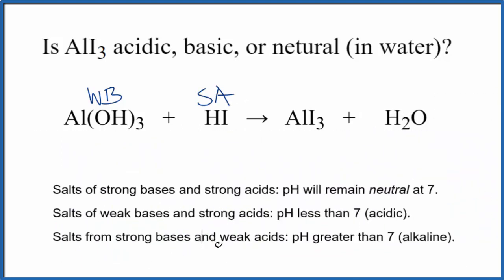We can use these rules here to figure out whether AlI₃ is acidic, basic, or neutral dissolved in water. Let's see, weak base, strong acid. Here's a weak base, strong acid. So the pH, that's going to be less than 7 when our AlI₃ is dissolved in water. That means it's going to be an acidic solution.